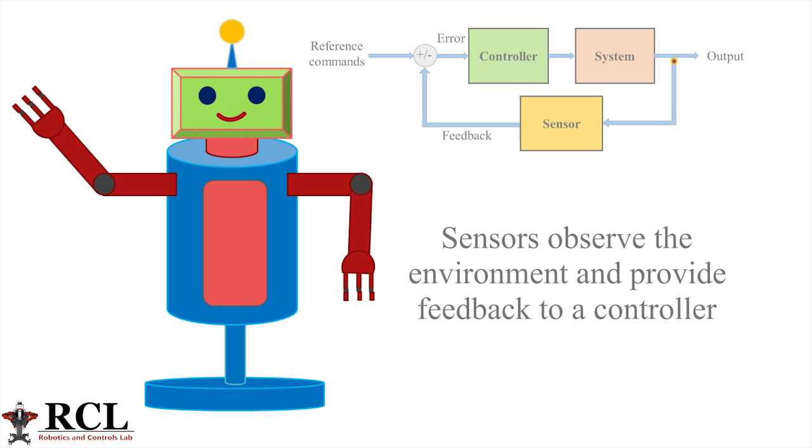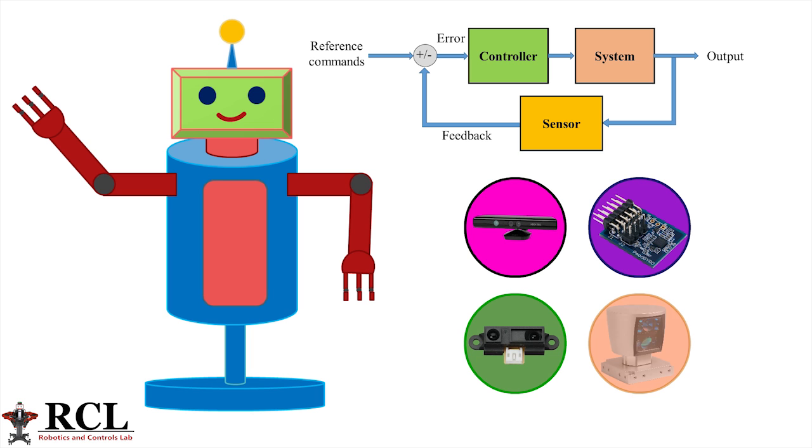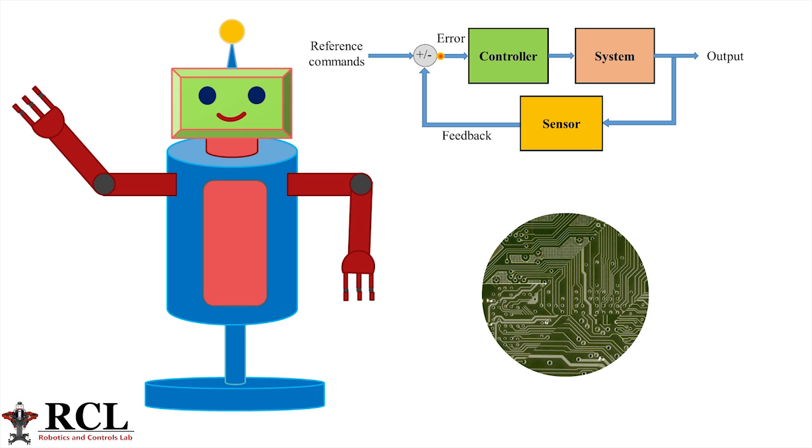Sensors observe the environment and provide feedback to a controller. Modern robots are equipped with a variety of sensors such as cameras, gyroscopes, IR sensors, and lidar. The controller is the brain of the robot that takes the information perceived by the sensors and makes decisions.